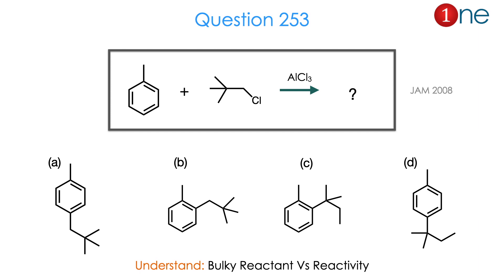Let us look at the next question. You are attacking toluene with tertiary pentylchloride in the presence of a catalyst. They ask you to find the product: whether substitution occurs at para or ortho, or the ortho with rearranged product, or the para with rearranged product — four different possibilities. From the pentylchloride and the four possible answers, you might realize the question is really about bulky reactant versus reactivity. The answer is D. Let us see how.